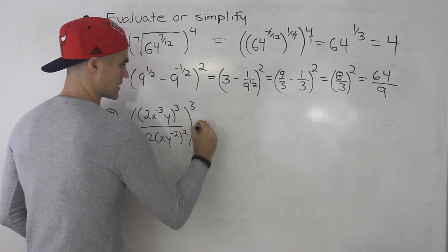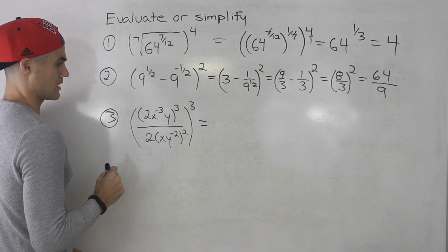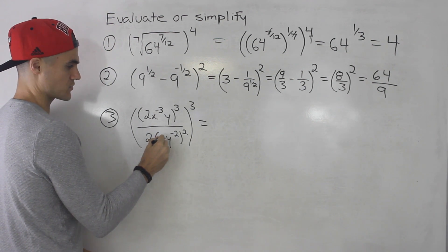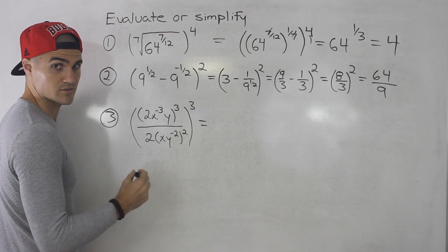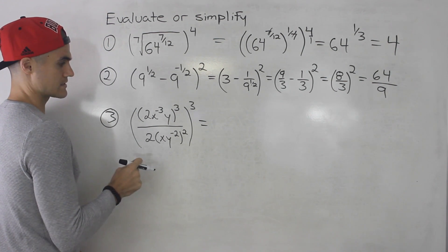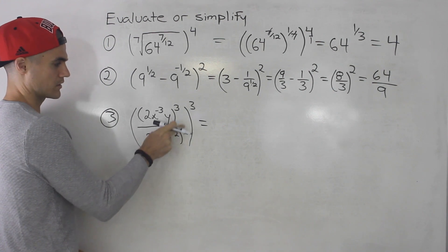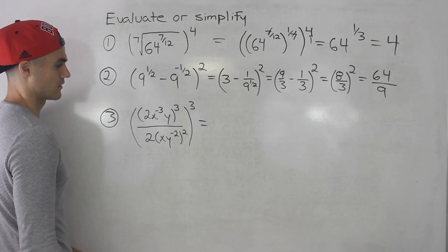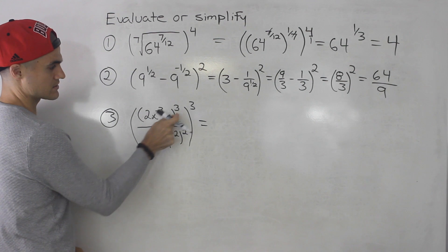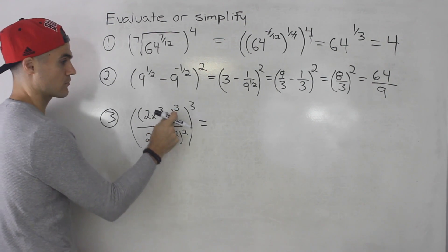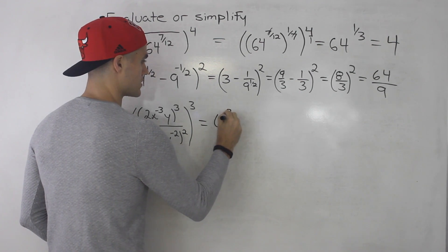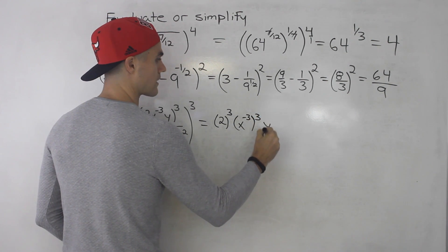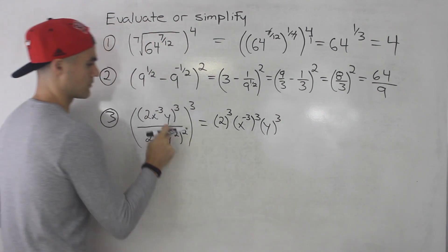Number 3 is a little more complex. We've got 2x to the negative 3 times y, all to the power of 3, all over 2 times xy to the negative 2, all to the power of 2, and then that's all to the power of 3. I'm going to work with the inside bracket first. For the numerator bracket to the power of 3: 2 to the power of 3, x to the negative 3 all to the power of 3, and y to the power of 3 — since this y is by itself.